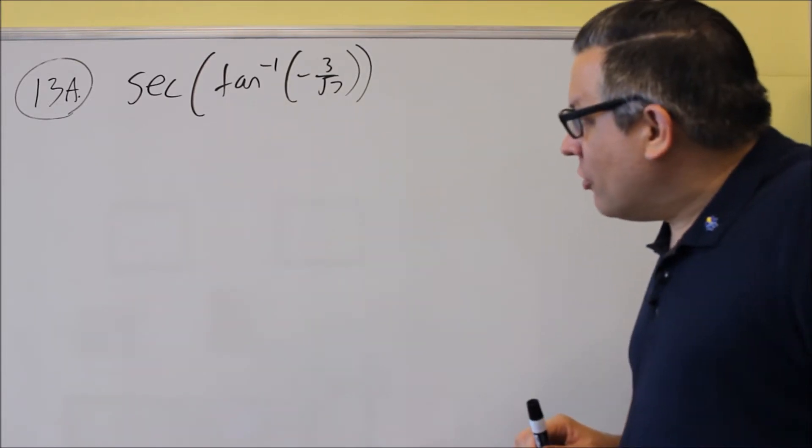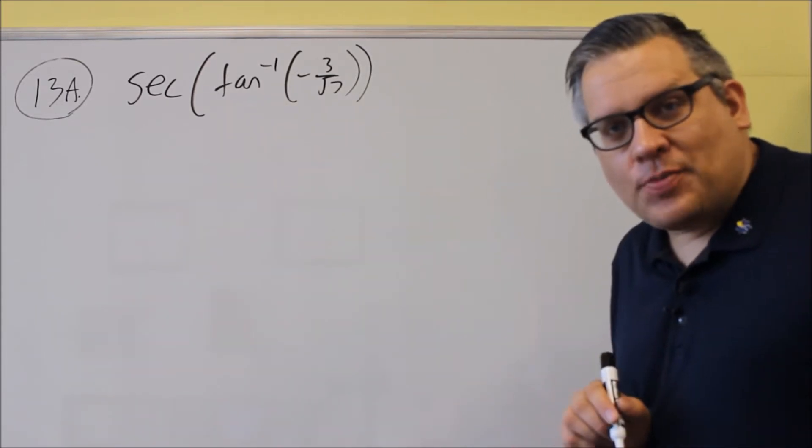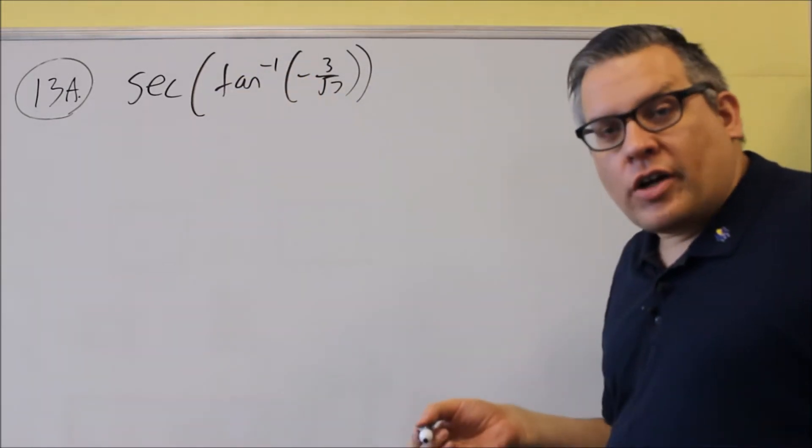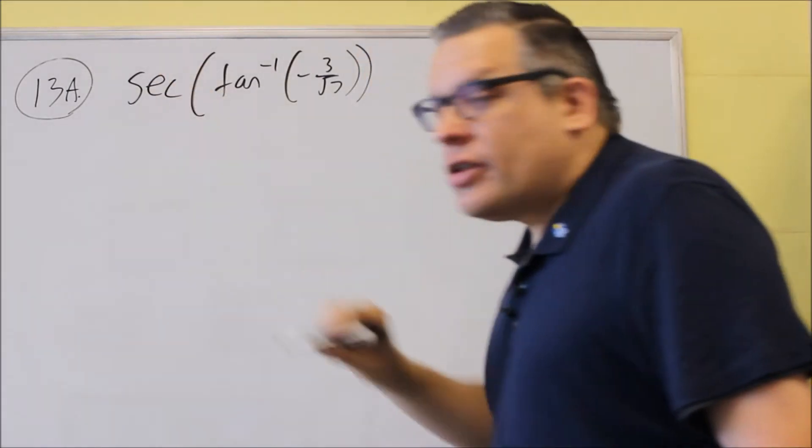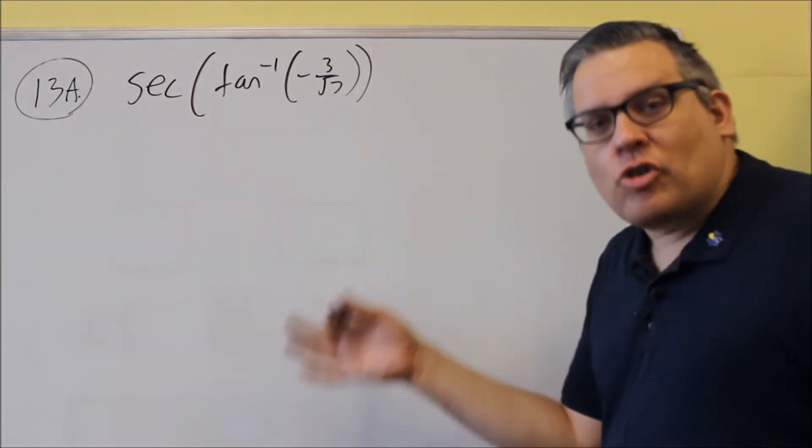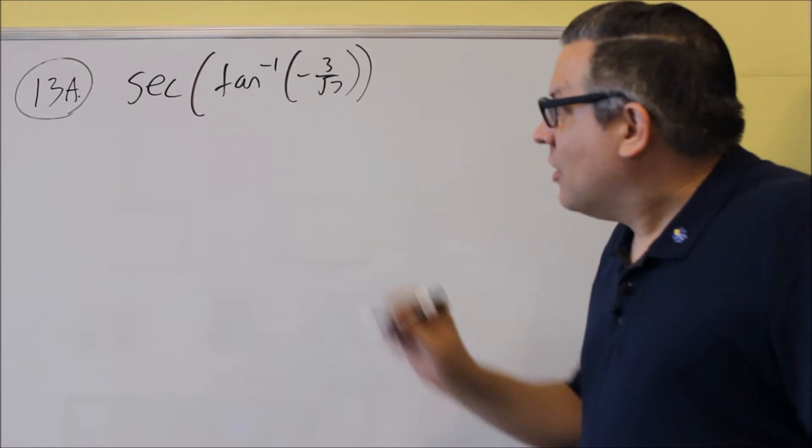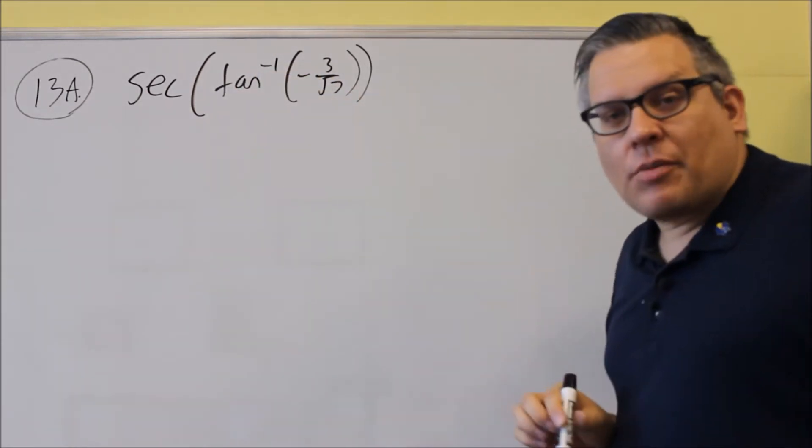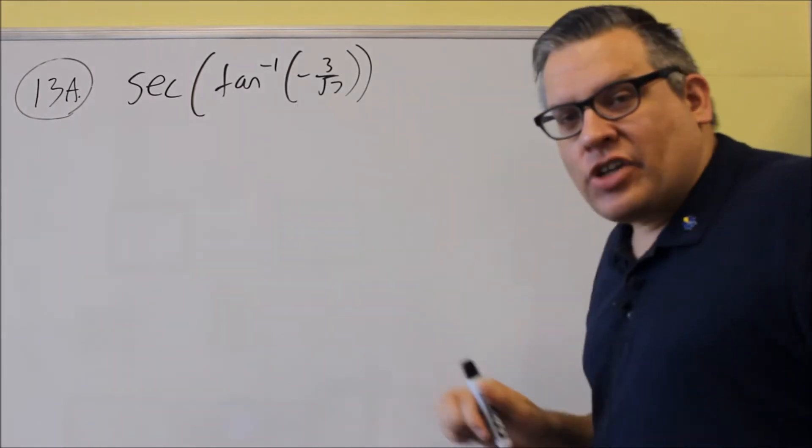What you're going to do is we need to draw a triangle that's based on that. The inside trig function is what you're going to use to draw the triangle. The outside one is what you're going to use to get your answer once the triangle is drawn. Now, we have an inverse tangent.